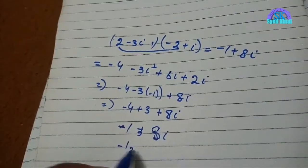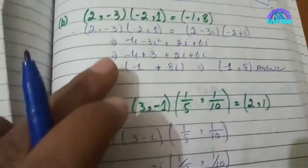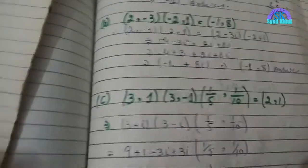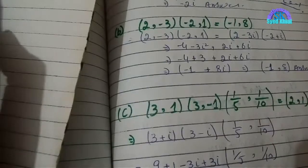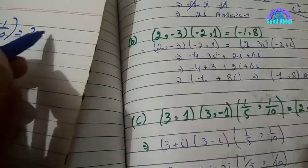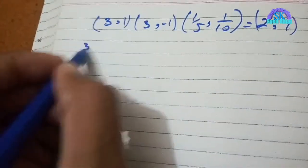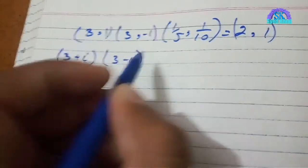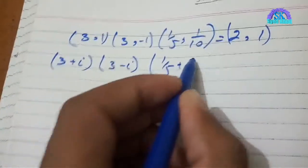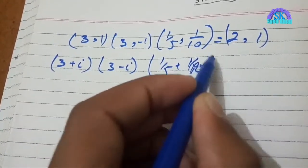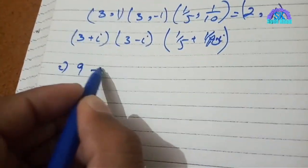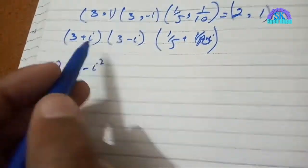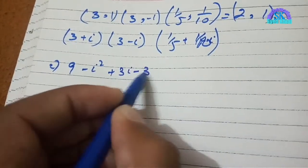Question number three: (3+i)(3-i) = (5+10i). To prove this question, I will select something. I need (3+i) and (3-i). When I multiply, I get 3×3 which is 9, minus i squared, plus 3i minus 3i.